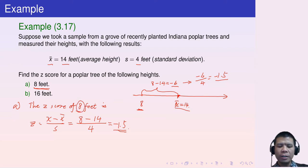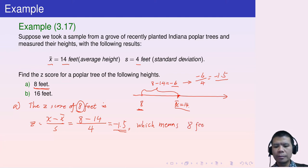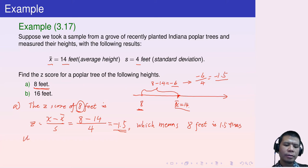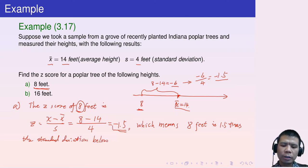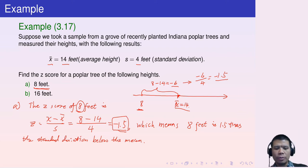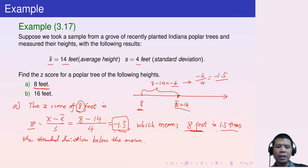So negative 1.5 means that 8 feet is 1.5 times the standard deviation below the mean. Be careful — because it's negative, it means below the mean. The z-score of 8 is negative 1.5, which means 1.5 standard deviations below the mean.